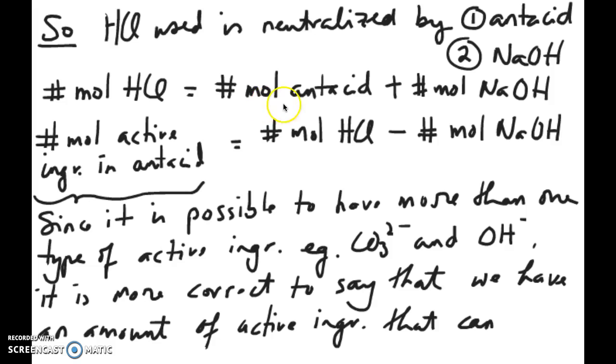And remember our goal. Our goal is to figure out how much bases we have in the antacid. So then what we can do is we can rearrange this equation and say the number of moles of active ingredient bases in the antacid should equal the number of moles of HCl minus the number of moles of NaOH.